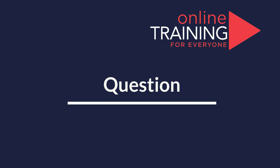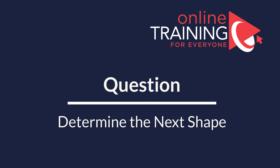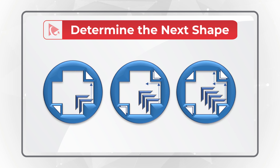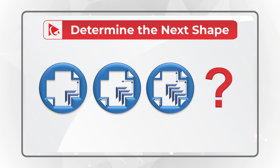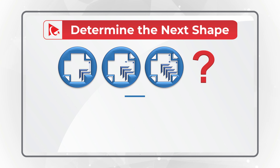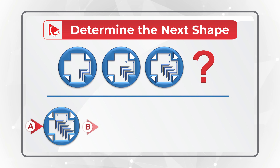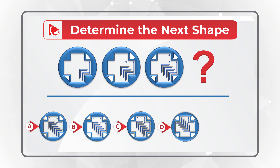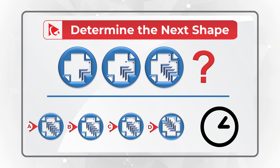Now here's a question for you to test your skills. You're presented with a series of objects and you need to determine the next object in the sequence. Please choose one of four choices: A, B, C, or D. Please post your version in comments — this will allow me to give you feedback. Thanks for participating and good luck.